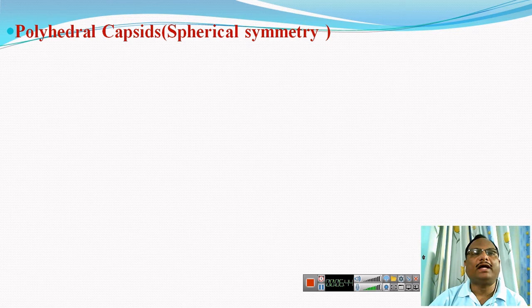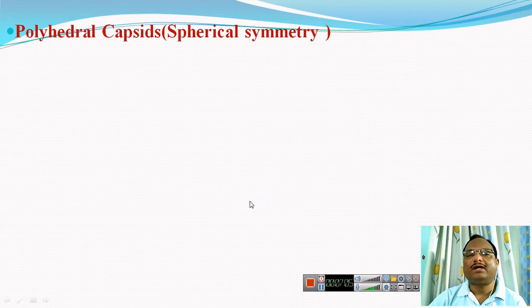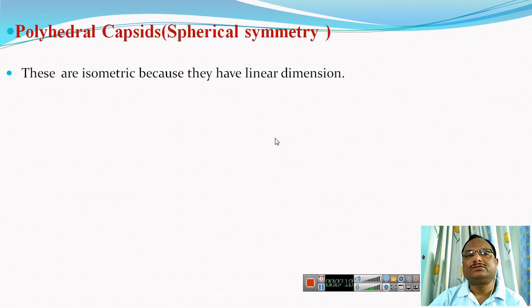Among the three types of capsids, the first important type is called polyhedral capsids. Polyhedral capsids have spherical symmetry, meaning they are responsible for giving the spherical shape to viruses. The most common example is the HIV virus, where the capsid is polyhedral, giving the virus its spherical shape.